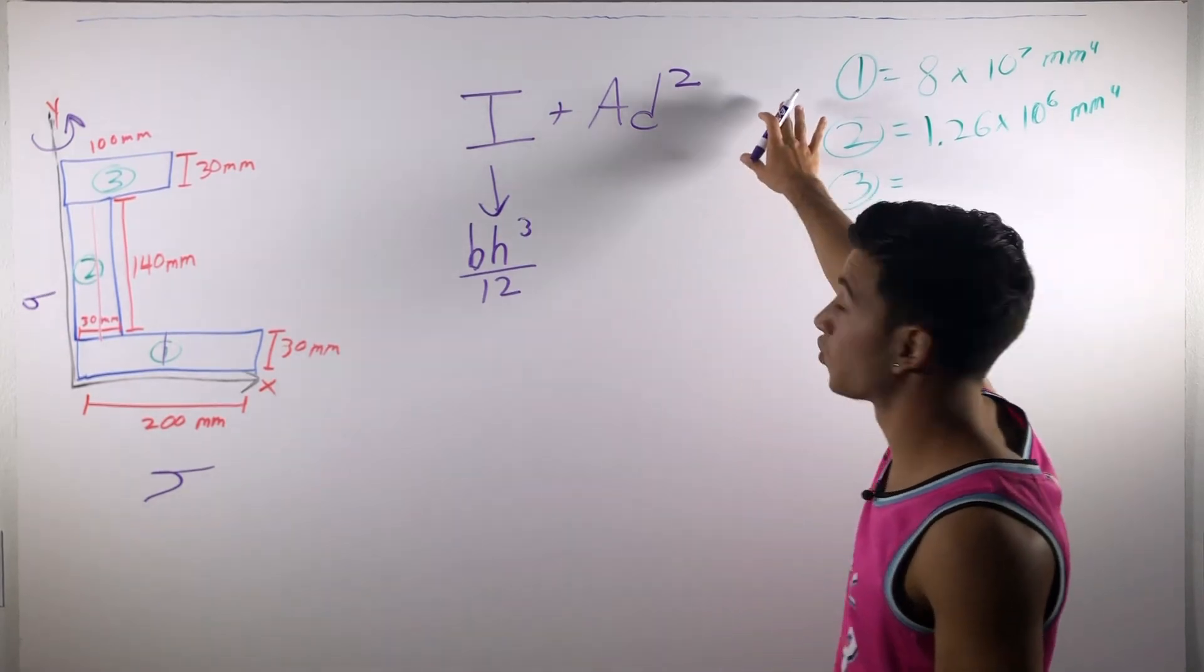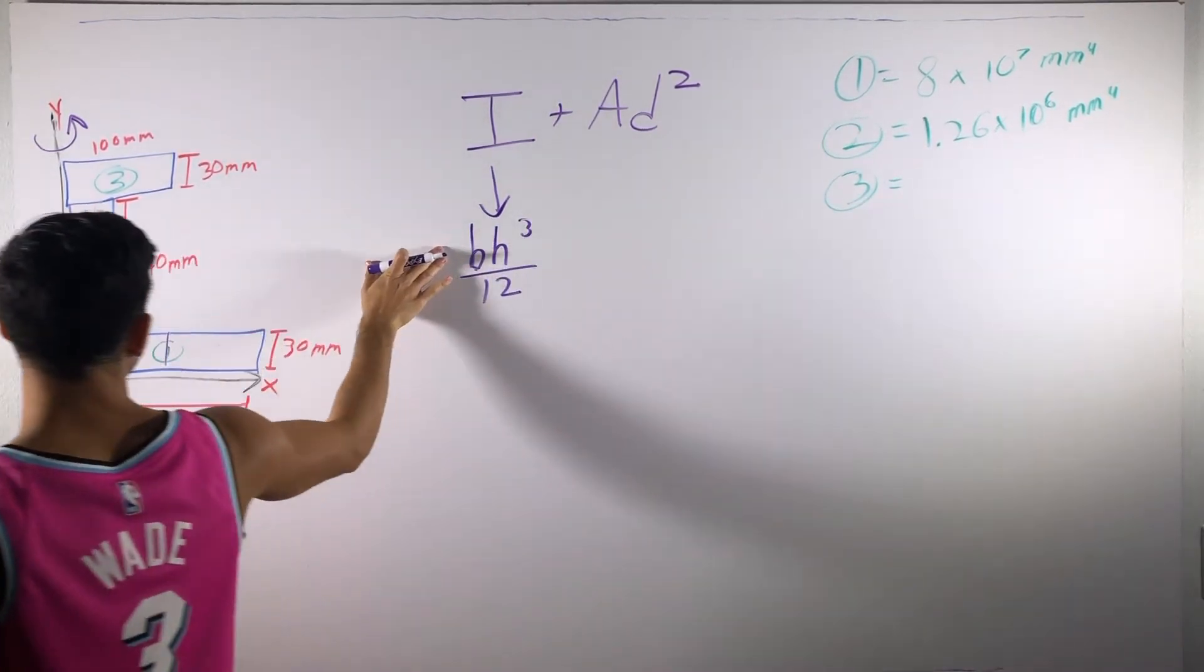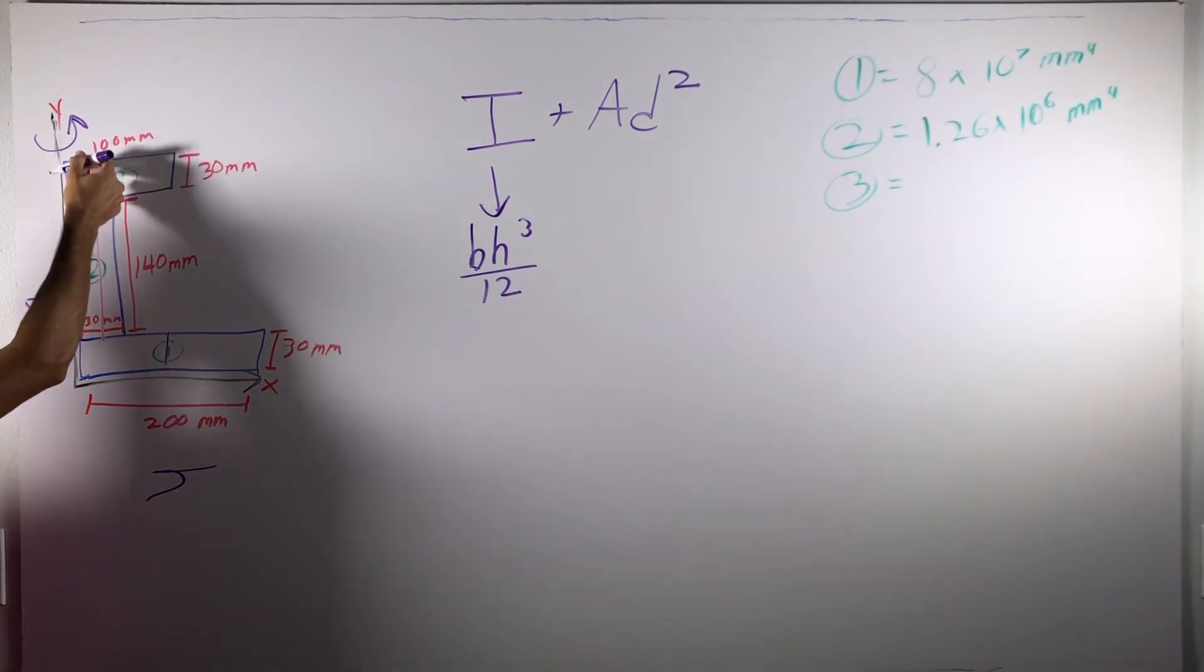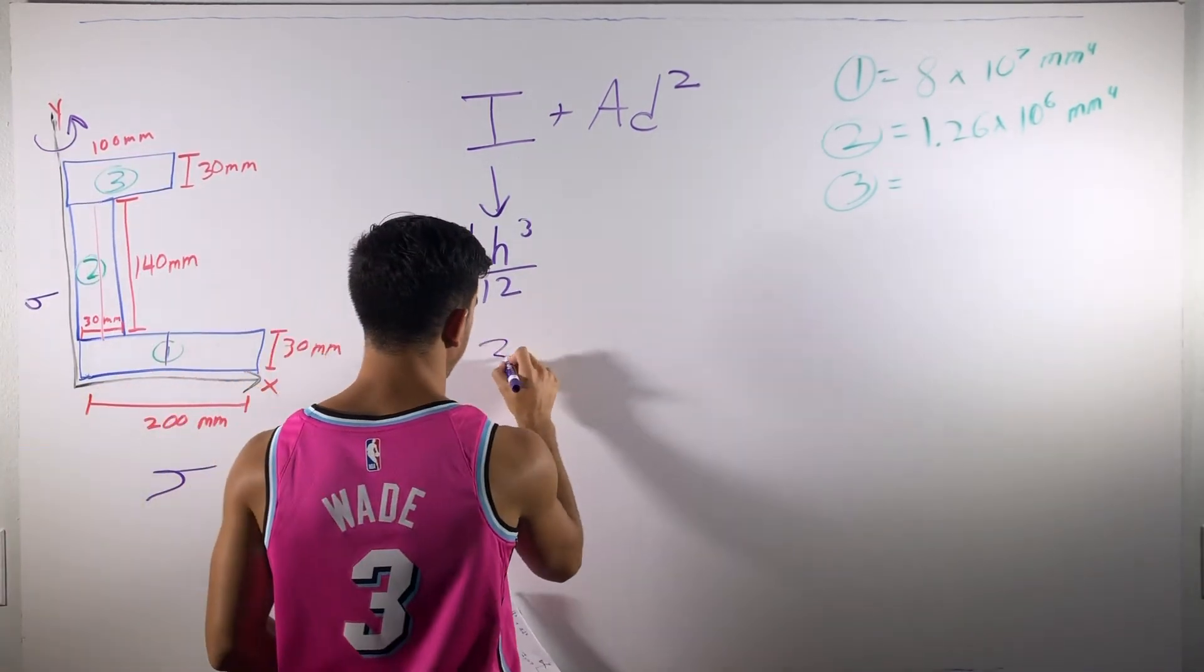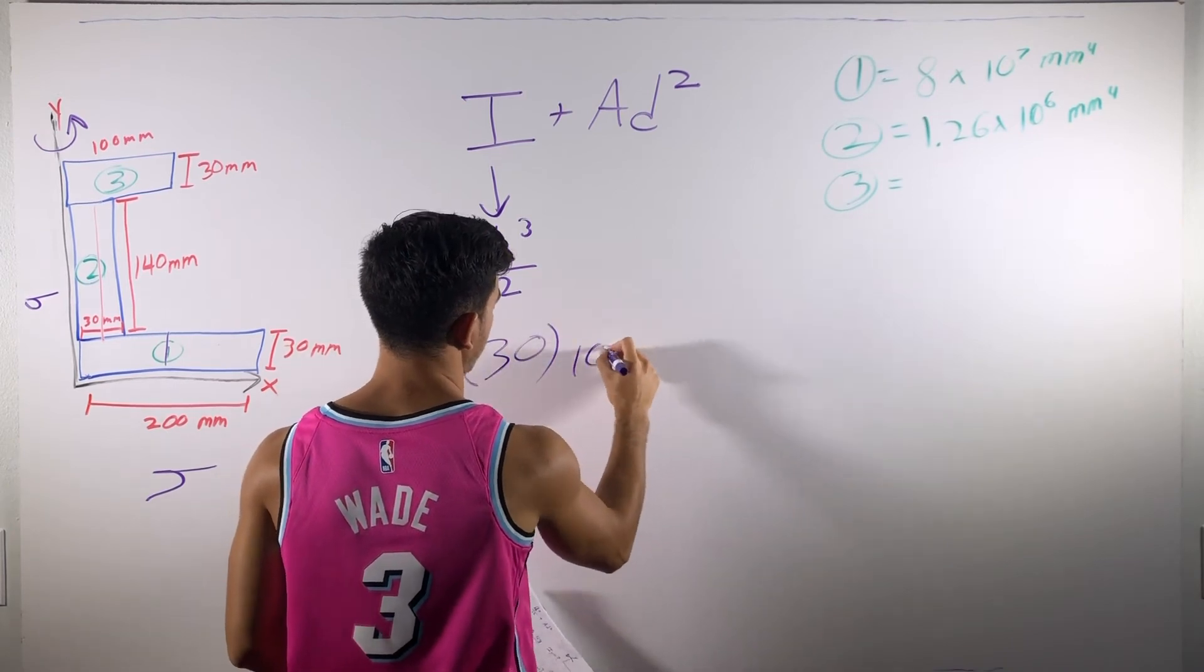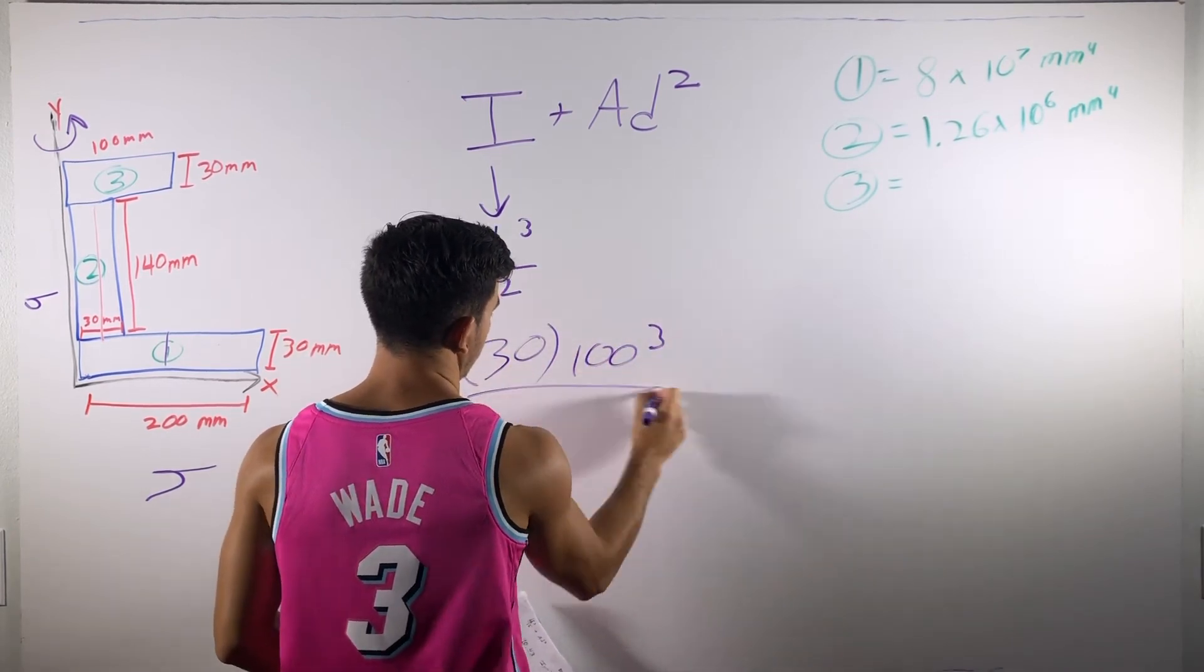So, now we have our section one and our section two. Let's take a look at section three. So, the base of section three is going to be 30 and the height is going to be 100. So, let's write that in: 30 for the base and the height is going to be 100. That's to the third divided by 12.